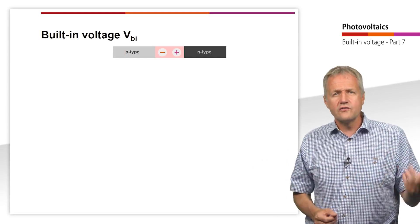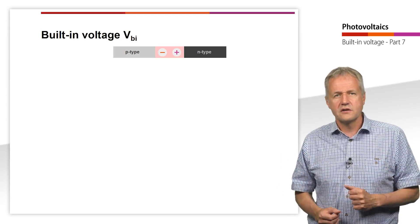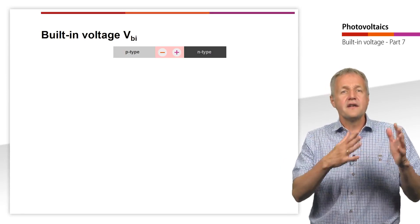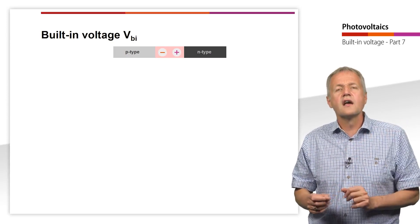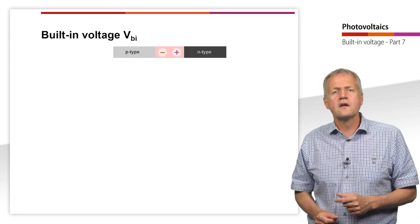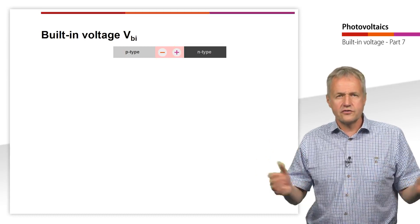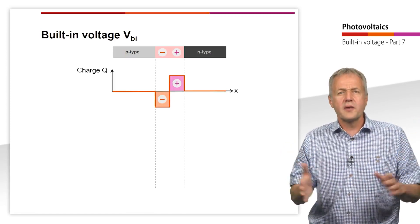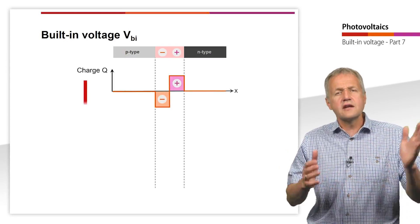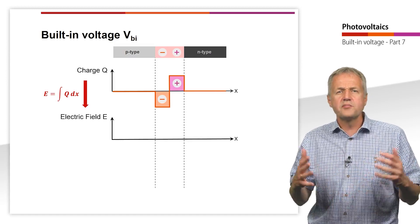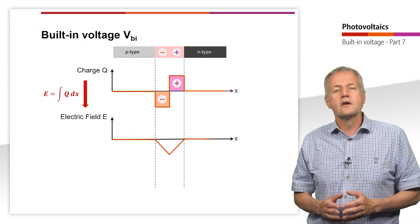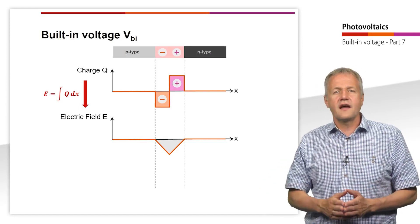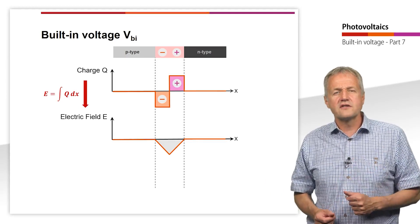In order to calculate the built-in voltage, we must somehow get a description of the electric potential. We will get that by taking a closer look at the depletion region. Inside the depletion region, there are negatively charged space charges in the p region and positively charged space charges in the n region. Outside the depletion region, the semiconductor is quasi-neutral. If we look at the space charge density as a function of distance in the semiconductor, we can approximate that function by a step function. Integrating the space charge densities from the left to the right edge of the depletion region gives us the electric field E. The field strength is highest at the boundary between the n and the p region and decreases linearly at the edge of the depletion region. Far from the boundary between the regions, the electric field is zero.